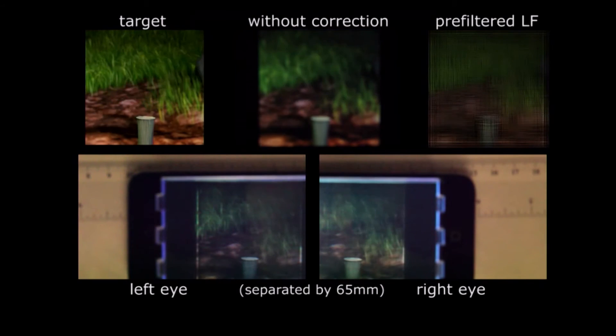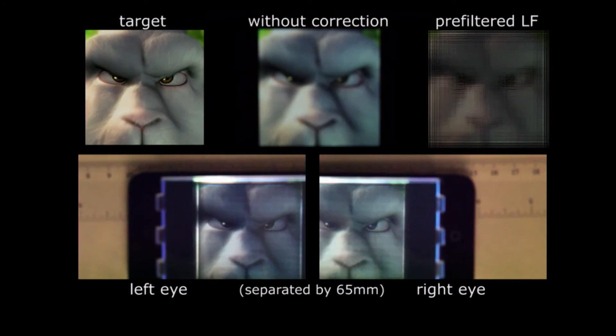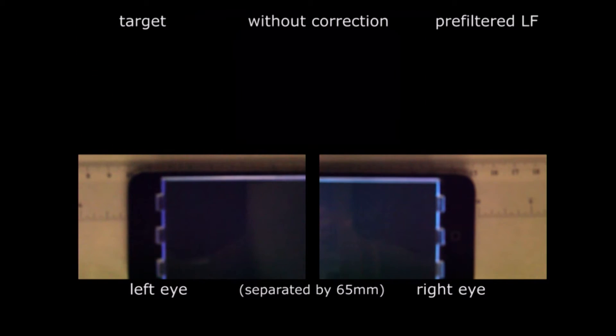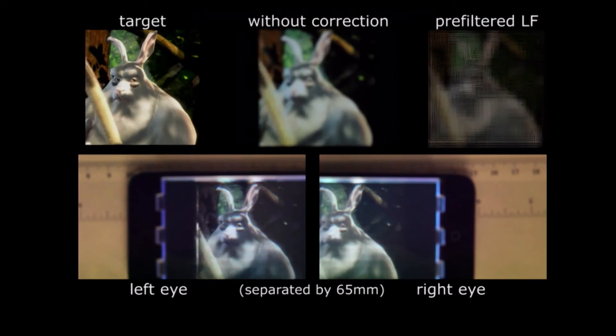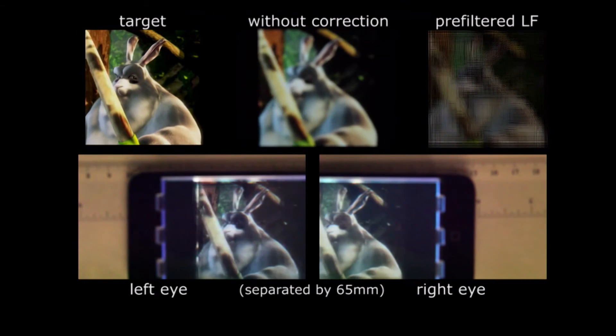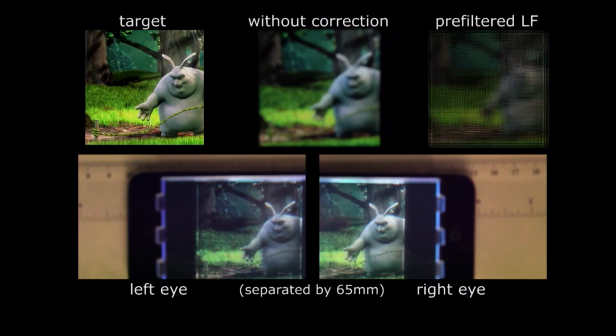So in this work, we use a light field display to correct the vision problem. We design both the hardware and the algorithm so that when showing the pre-filtered light field content, the observer can actually perceive a sharp image.